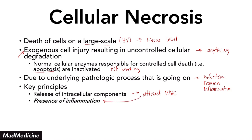Those white blood cells notice that something is not right — they see intracellular components outside where they should not be. So they rapidly respond and cause inflammation to kill off whatever underlying pathologic process is going on. The white blood cells may not be able to differentiate at that moment whether it's trauma, infection, or general inflammation. All they see is a pathologic condition and they need to respond quickly to save your life, even though it's going to cause more damage in the short term.